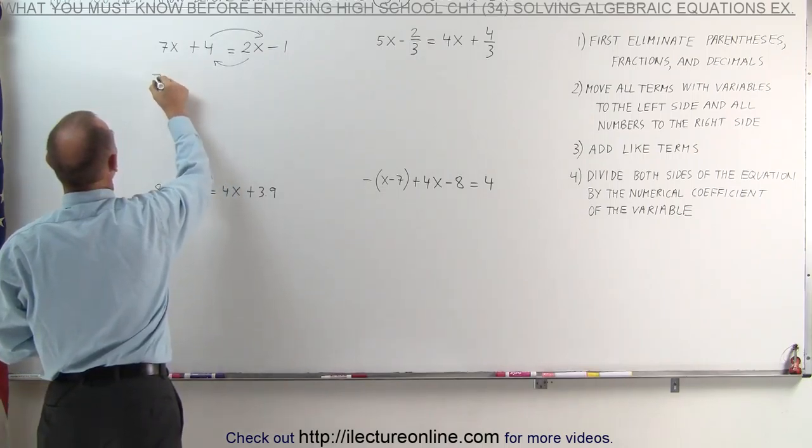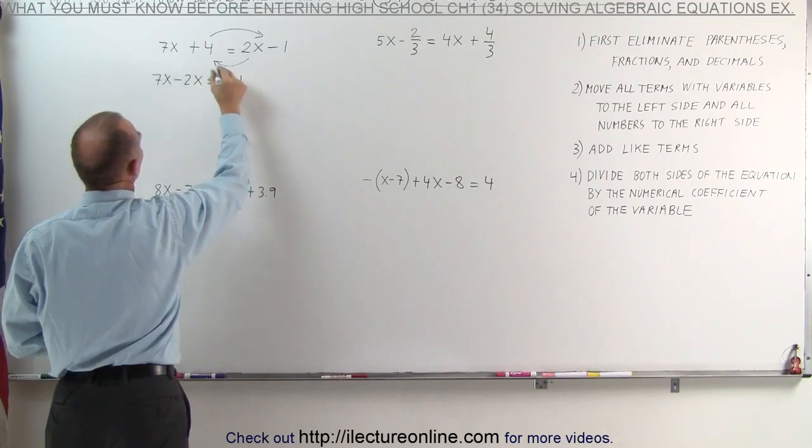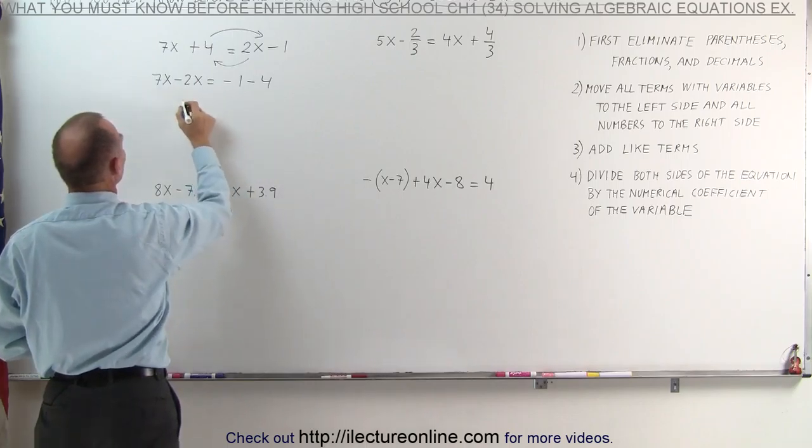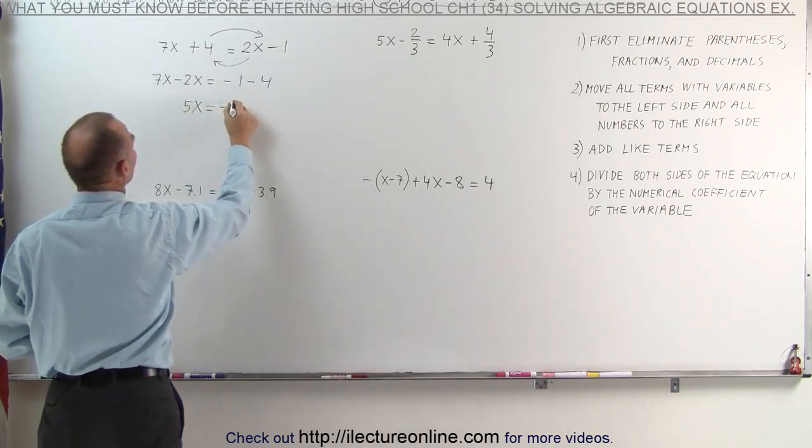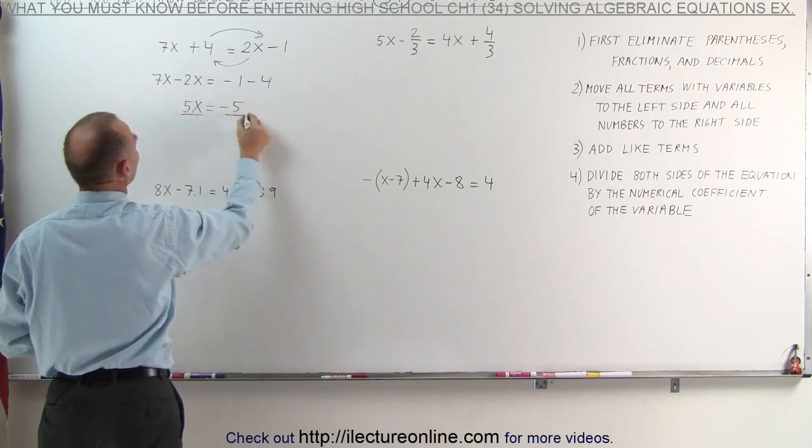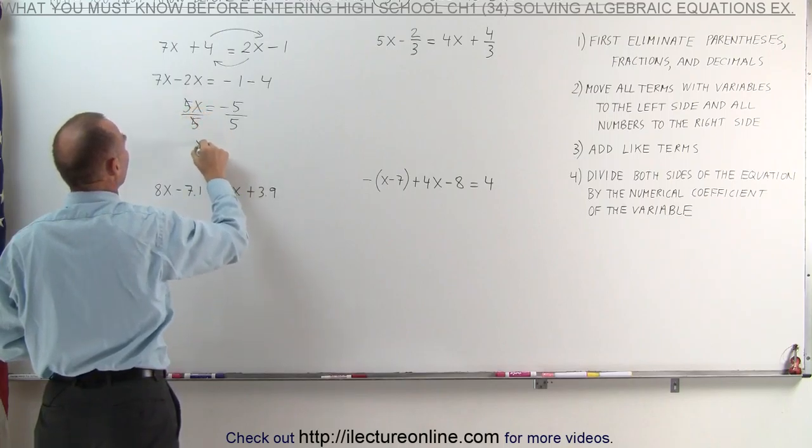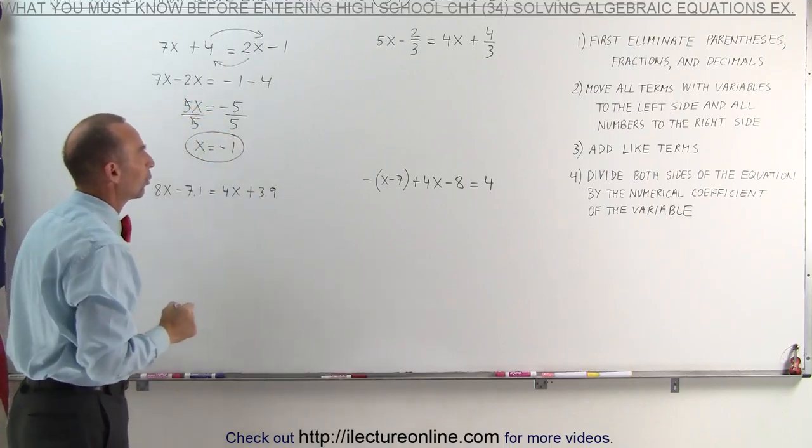This then becomes 7x minus 2x equals minus 1 minus 4. Combining like terms, step number three, 7x minus 2x is 5x equals minus 1 minus 4, which is minus 5. Then we divide both sides of the equation by the numerical coefficient of the variable, and we get x equals minus 1, which is the solution to our first equation.